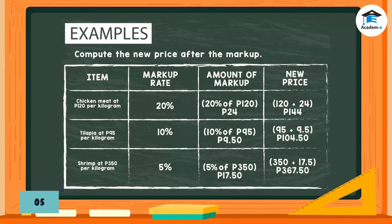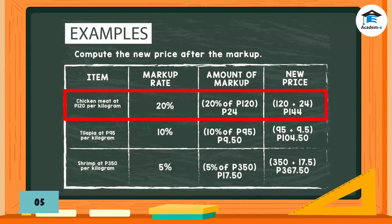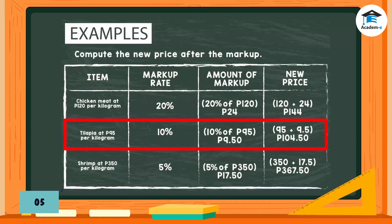More examples — compute the new price after the markup. Item: chicken meat at 120 pesos per kilogram. Markup rate: 20%. Amount of markup: 20% of 120 pesos = 24 pesos. New price: 120 pesos + 24 pesos = 144 pesos.